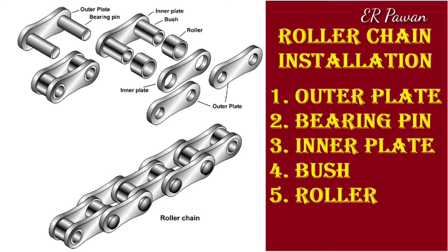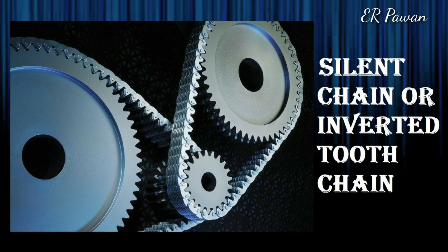Roller chain is used in high-speed power transmission devices like motorcycles. The silent chain, or inverted tooth chain, operates quite silently and can be used in high-speed power transmission areas. This type of chain does not have any roller; it is accurately shaped so it can easily sit over the sprocket. However, lubrication is an important factor for this type of chain, otherwise it will wear and tear out very fast.